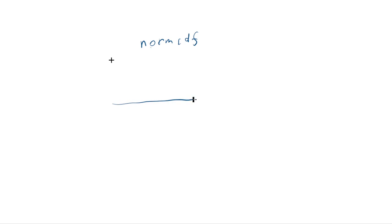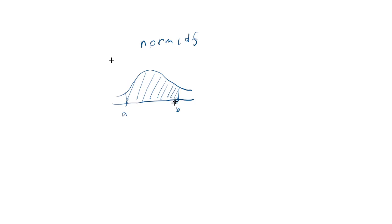normCDF requires two endpoints — a starting point and an endpoint of a standard normal distribution. When you provide them, it returns the area under the curve, which corresponds to the probability that a test statistic belongs to that region. So standard usage is A to B, and that's all you need to know.